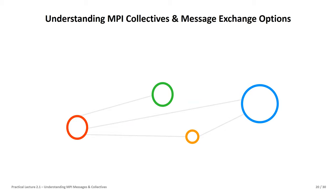We've seen already in the conceptual lecture two that there are MPI collectives—very powerful operations that affect not only one or two processes but very many others, depending on the size and the communicator. And these are lots of different message exchange options that we have with this.